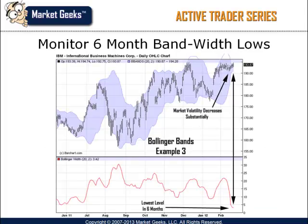The squeeze begins with the bandwidth making a six-month low. It doesn't matter what the actual number is because it's relative only to the market that you're looking to trade and nothing else. In this example, you can see IBM stock reaching the lowest level of volatility in six months. Notice how the price of the stock is barely moving at the time the six-month bandwidth low is reached. This is the time to begin looking at markets because the six-month low bandwidth level typically precedes strong directional moves.